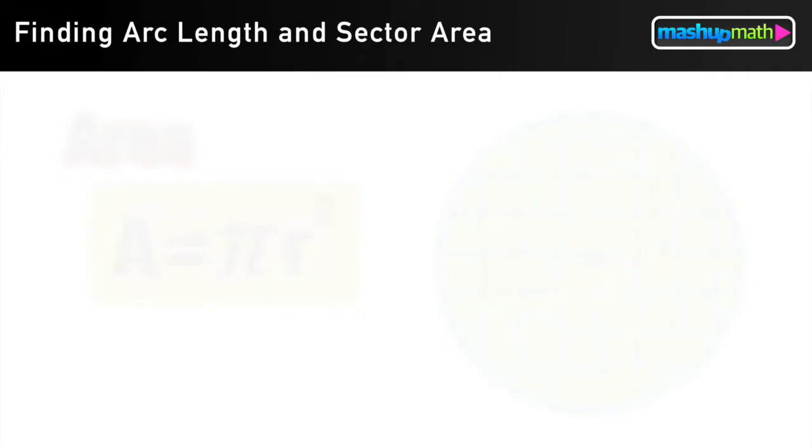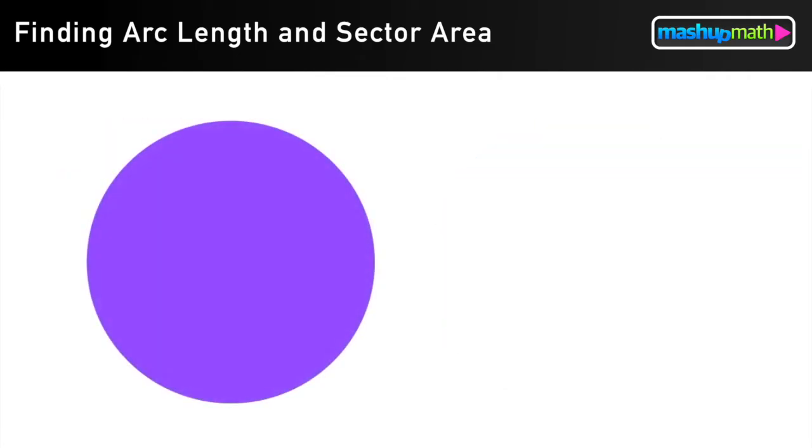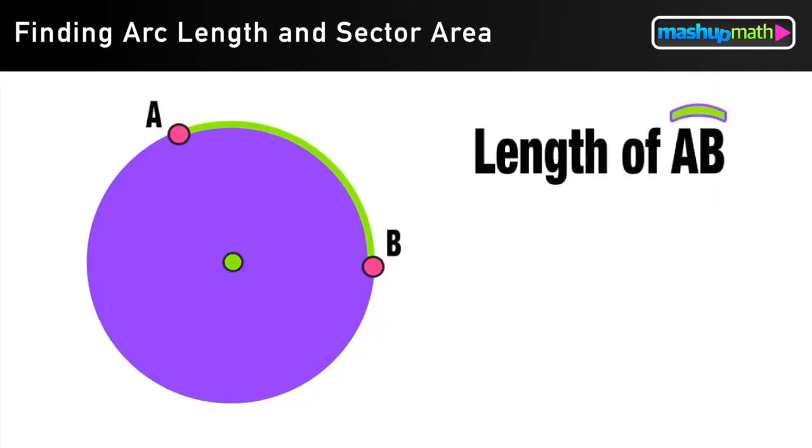Now with those familiar circle properties in mind, let's go ahead and ask the question: what if we didn't want the whole circumference of a circle? What if we only wanted the length of a portion of it? In this case, we wanted the length of an arc AB.